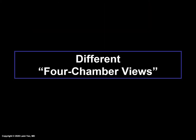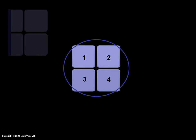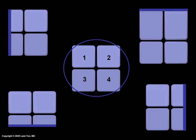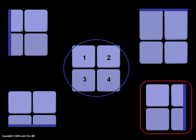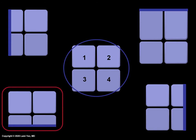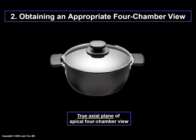It is important to introduce the concept that four-chamber views can look very different from each other and may not be a true axial plane. Although all images technically show four cardiac chambers, the appearance varies depending upon the orientation of the ultrasound beam to the fetal heart. For example, the left side of the heart can be foreshortened, the right side foreshortened, the atria foreshortened, or there can be lengthening of the ventricles. To achieve an appropriate four-chamber view, one must obtain a true axial plane. A good analogy is a stock pot and its lid — if a true axial plane is obtained through the fetal chest, the lid will be flush with the stock pot.